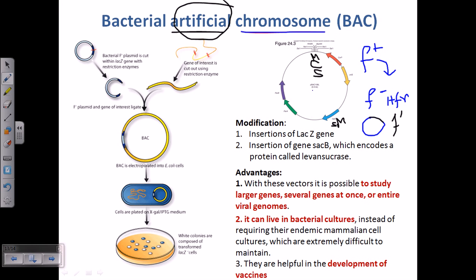We take the chromosome out from F prime, modify it, and insert genes. The modification involves inserting either the lacZ gene or the sacB gene. In this picture, the blue region of the vector contains the lacZ gene. We incorporate lacZ or sacB because they act as selectable markers in this system.